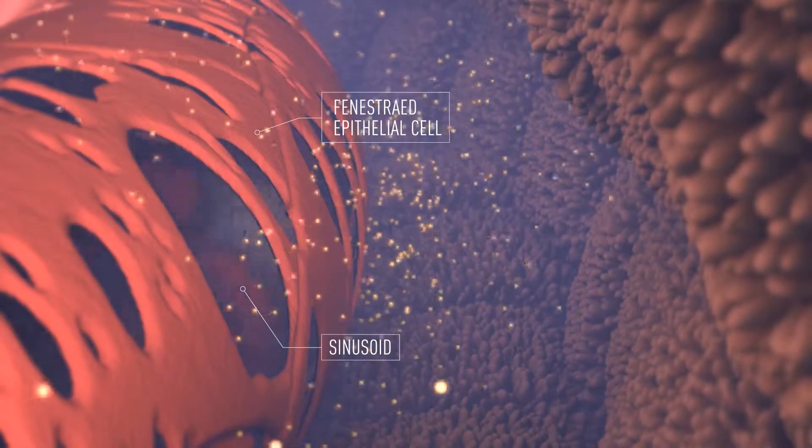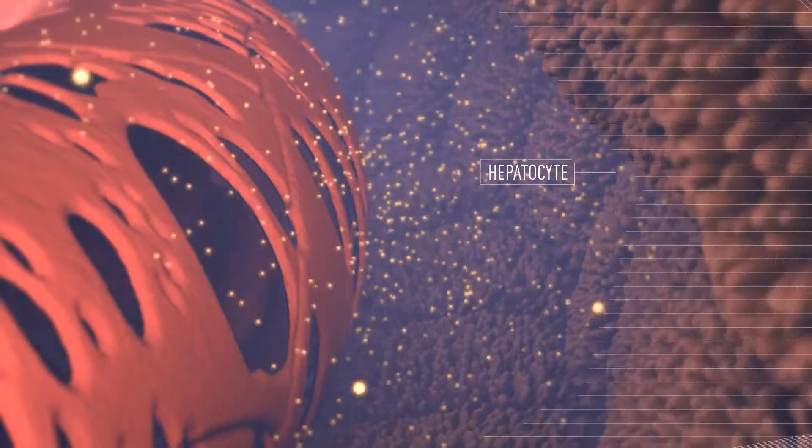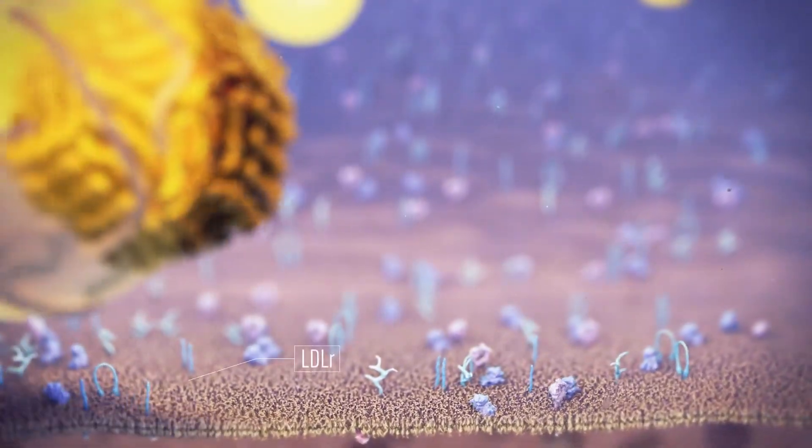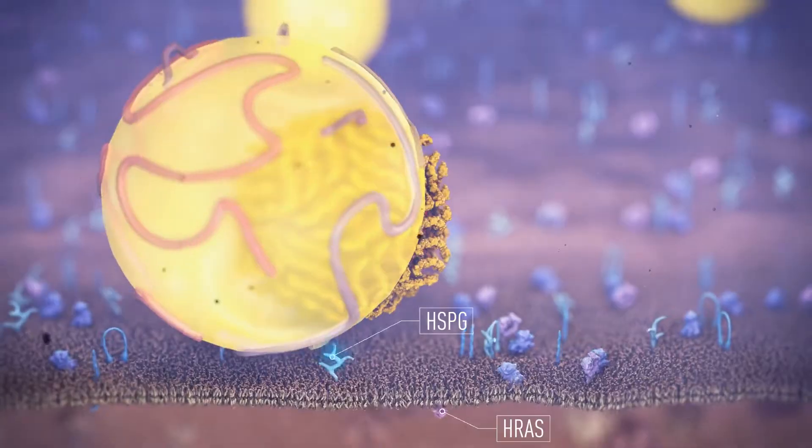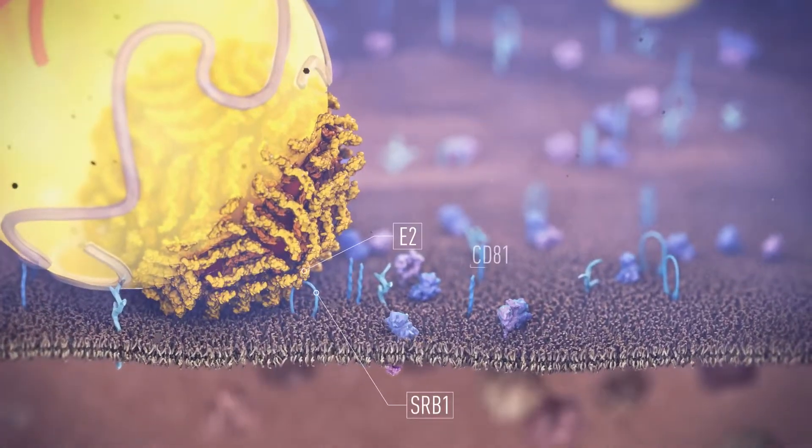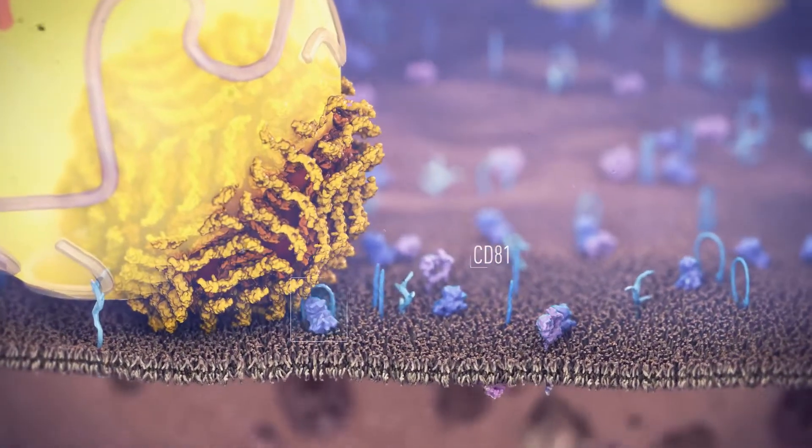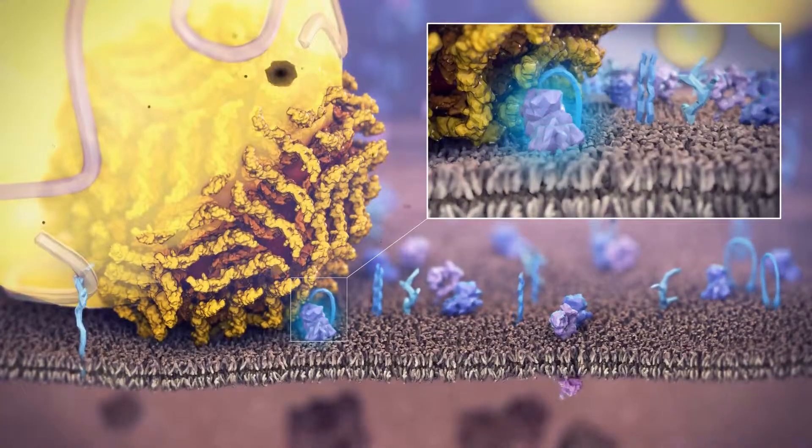Once an LVP leaves the bloodstream and reaches a hepatocyte, surface receptors create low affinity bonds with ApoE. The LVP then binds with SRB1, activating a cluster of co-receptors and exposing the binding site for CD81.